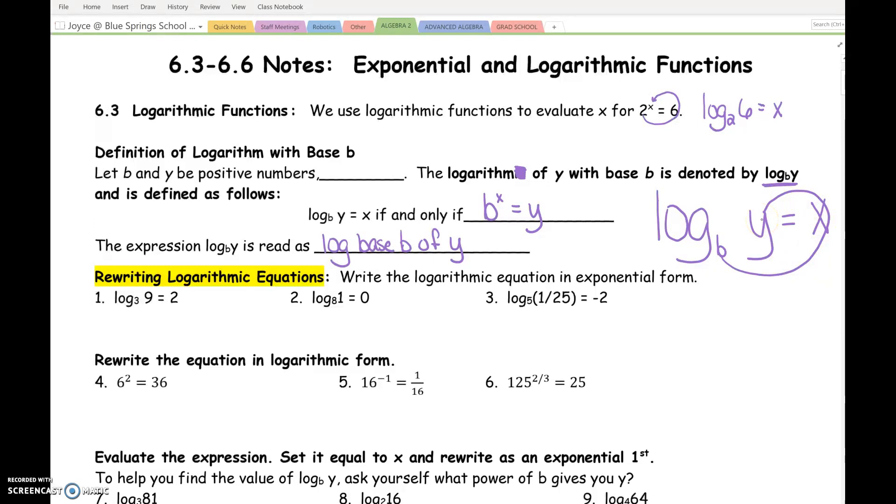So notice here where I wrote B to the X equals Y. That's the order that this little swoop touches. So if you have it in logarithmic form and you need to rewrite it as an exponent, start at the base and, woo, up to the Y. So let's rewrite some of these. Number one, log base three of nine equals two. Should we practice saying that? Start at the three. Ready? One, two, three. Woo! Now let's write this as exponents. The first number is three, raised to the second equals nine.